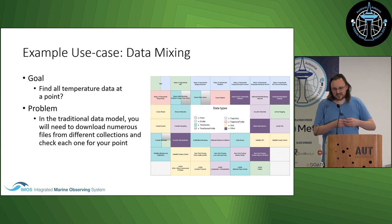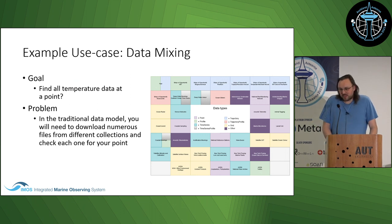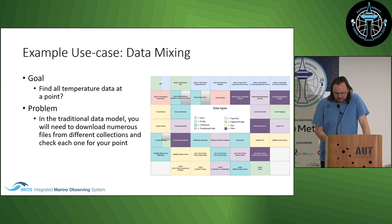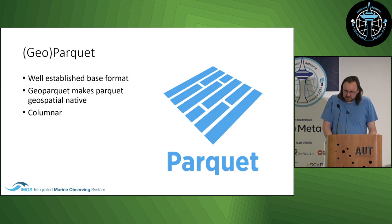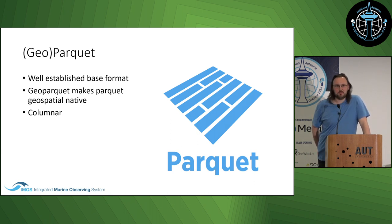The second use case is data mixing. Scientists constantly tell us they want to find a particular parameter at a particular point — they don't care if it was measured by satellites, seals, or moorings. They just want temperature data or similar. In the traditional data model, they need to download numerous files from various collections and check each one for that point. We've got a lot of datasets to look into. The solution we found is GeoParquet, which is a developing standard based on the well-established Parquet format, heavily used in business data lakes.